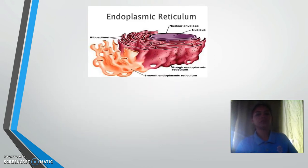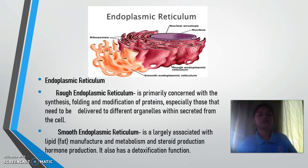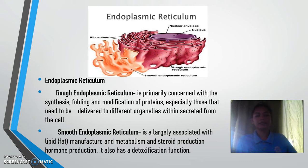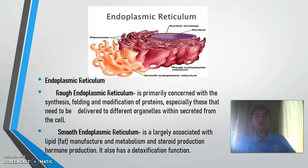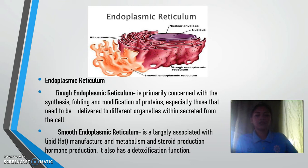Endoplasmic reticulum consists of two parts: the smooth and the rough endoplasmic reticulum. The rough endoplasmic reticulum is primarily concerned with the synthesis and modification of proteins, especially those that need to be delivered to different organelles or secreted from the cell. The smooth endoplasmic reticulum is largely associated with lipid and fat manufacture, metabolism, hormone production, and also has a detoxification function.